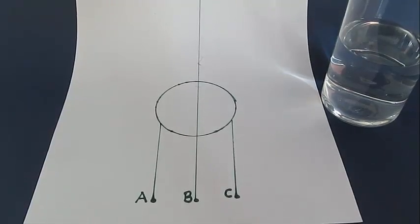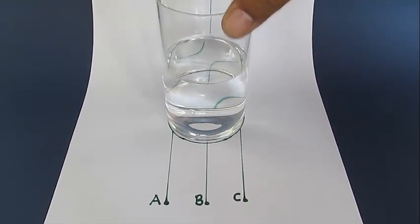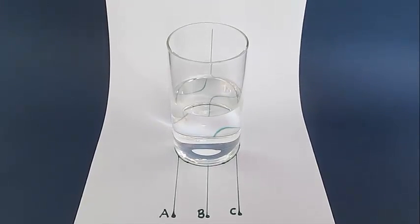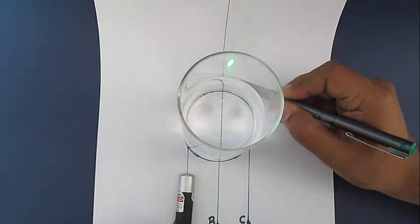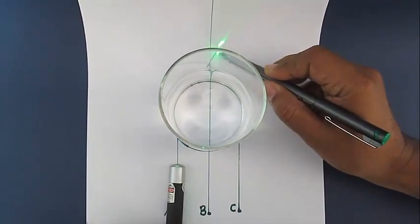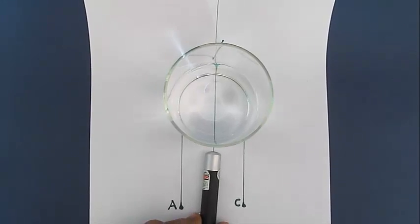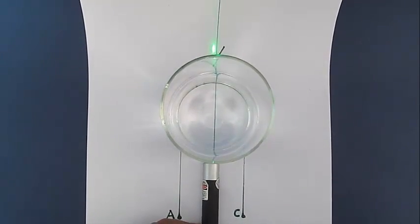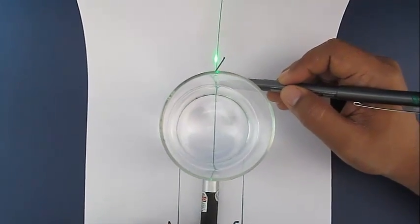Now let's repeat this experiment with the laser, and we can very clearly see the path of light. We place this glass and trace a circle around it, point a laser, and see that it has refracted and changed the direction by going. If we shine a laser right in the middle of the glass, it goes straight.